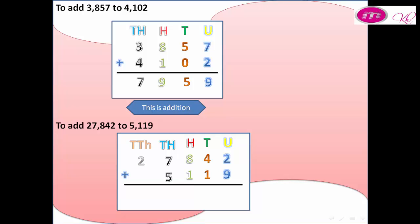2 plus 9 equals 11. We cannot put two digits in units, we put 1 only and carry 1 to tens. 4 becomes 5. 5 plus 1 equals 6, 8 plus 1 equals 9. 7 plus 5 equals 12. Like we did before in units, we do in thousands: we cannot put 12 in thousands, we put 2 only and carry 1 to ten thousands. 2 becomes 3. 3 plus 0 equals 3: 32,961. This operation is called addition with regrouping.